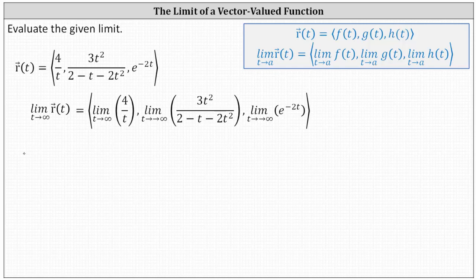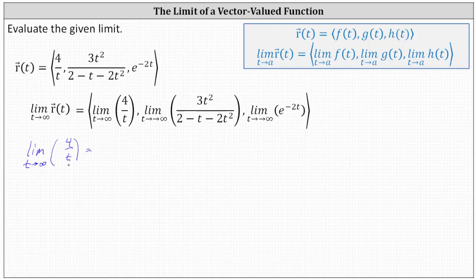Starting with the limit of the x component, we have the limit as t approaches infinity of four divided by t. In this case, the numerator is the constant four and the denominator t gets larger and larger and approaches infinity, which means the fractions get smaller and smaller and approach zero, indicating the limit is equal to zero.